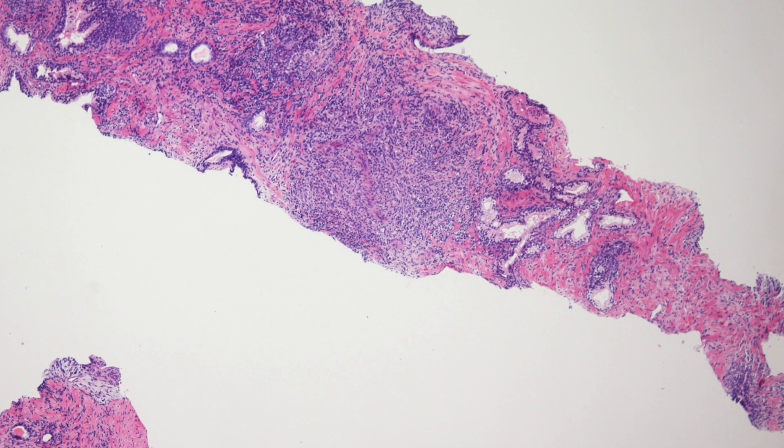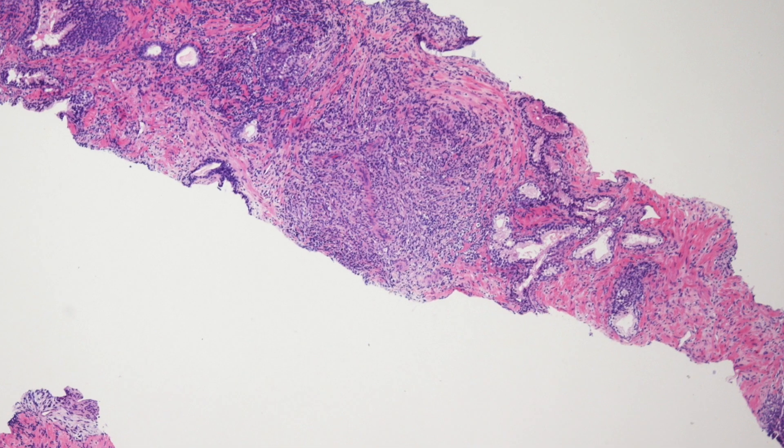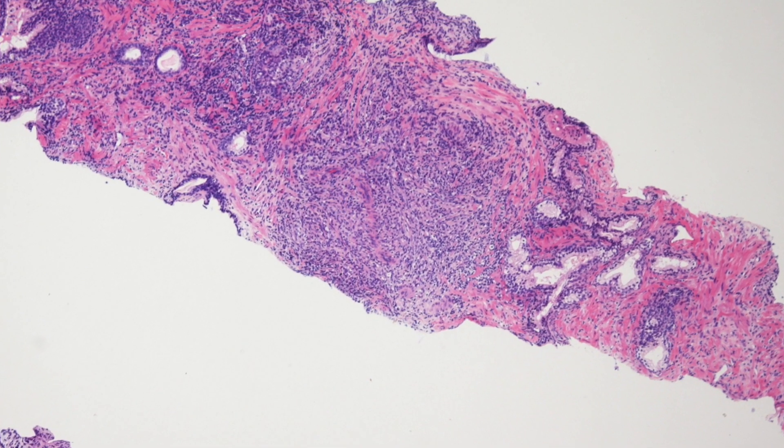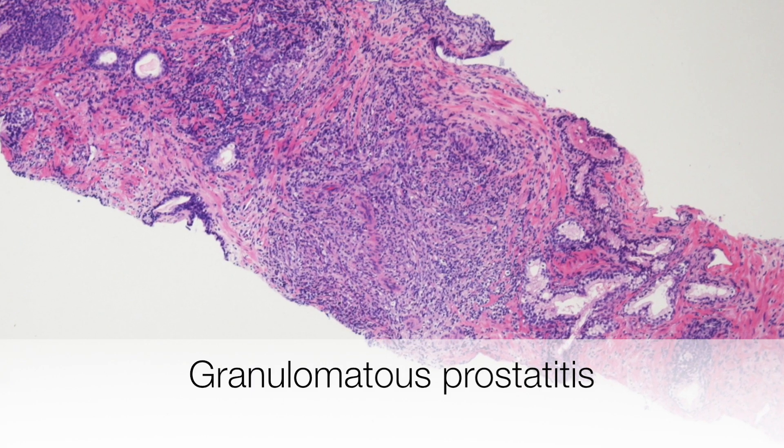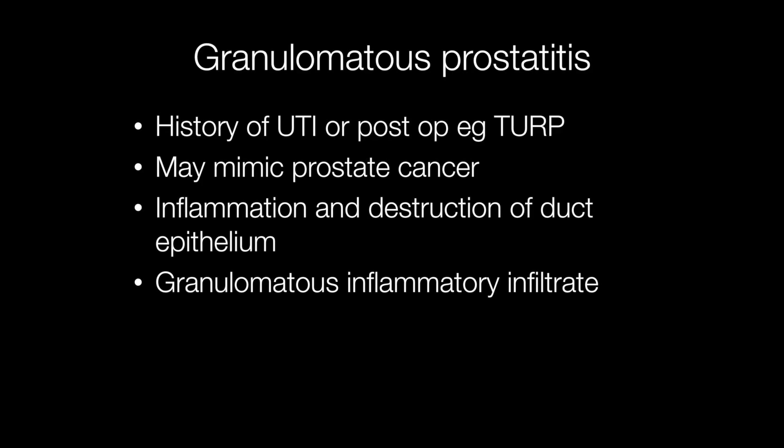The sixth case was a 69-year-old man who had a prostate biopsy with a PSA of 11.4, PIRADS 4. This is an example of granulomatous prostatitis. There are many causes, but the most common are a history of urinary tract infection or post-operative changes such as TURP. Granulomatous prostatitis may clinically and pathologically mimic prostatic carcinoma, with inflammation and destruction of duct epithelium producing a granulomatous inflammatory infiltrate, which may cause the PSA to rise.